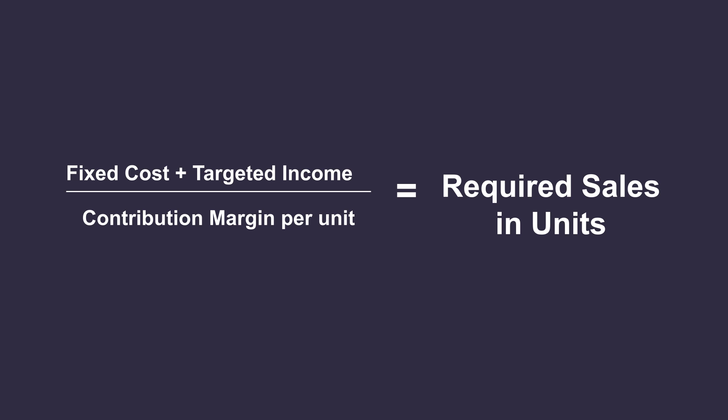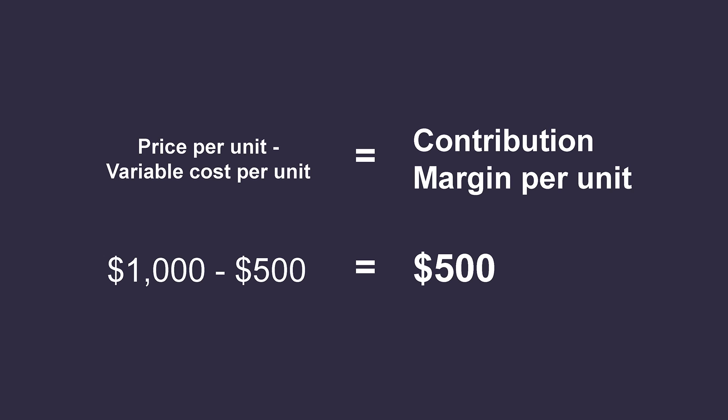What if you want to understand how many units — that is, computers — you will have to sell to make a profit of $50,000? The formula for required sales in units is: fixed cost plus targeted income, divided by the contribution margin per unit. To determine the contribution margin per unit, take the price per unit of $1,000 and subtract the variable cost per unit of $500, giving you a contribution margin per unit of $500.